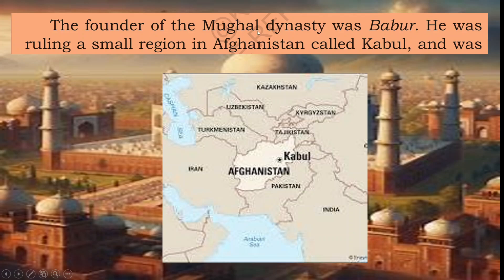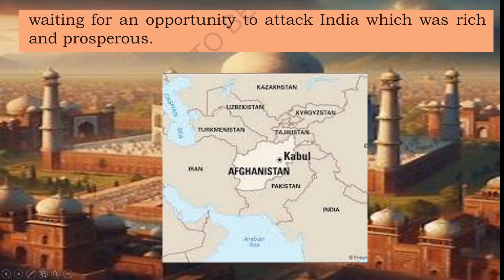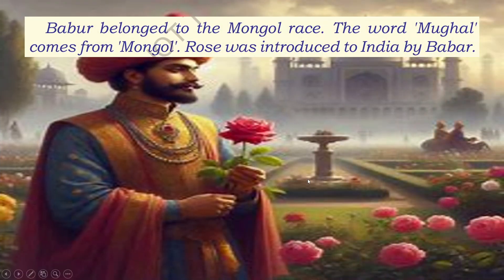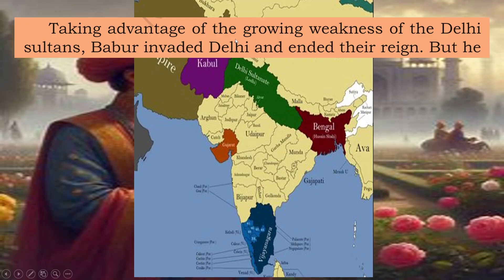The founder of the Mughal dynasty was Babur. He ruled a small region in Afghanistan called Kabul, which was his capital city. From there he invaded India, waiting for an opportunity to attack this rich and prosperous land. Babur belonged to the Mongol race — the word 'Mughal' came from 'Mongol.' He also introduced the rose to India. He sought advantage of the growing weakness of the Delhi Sultans.